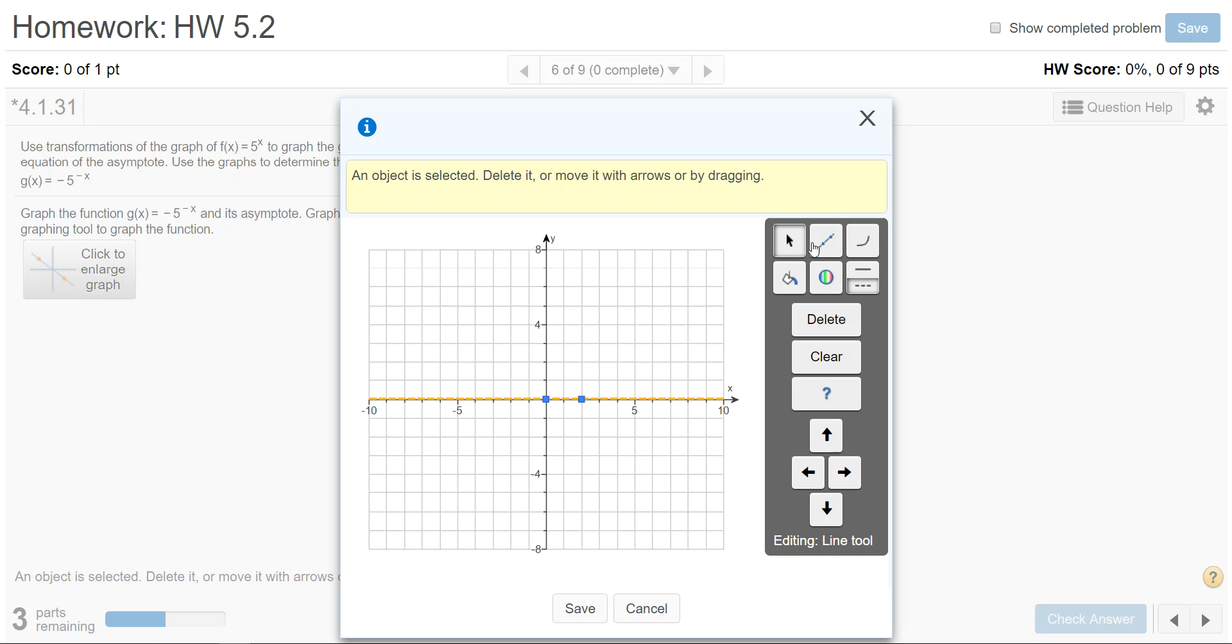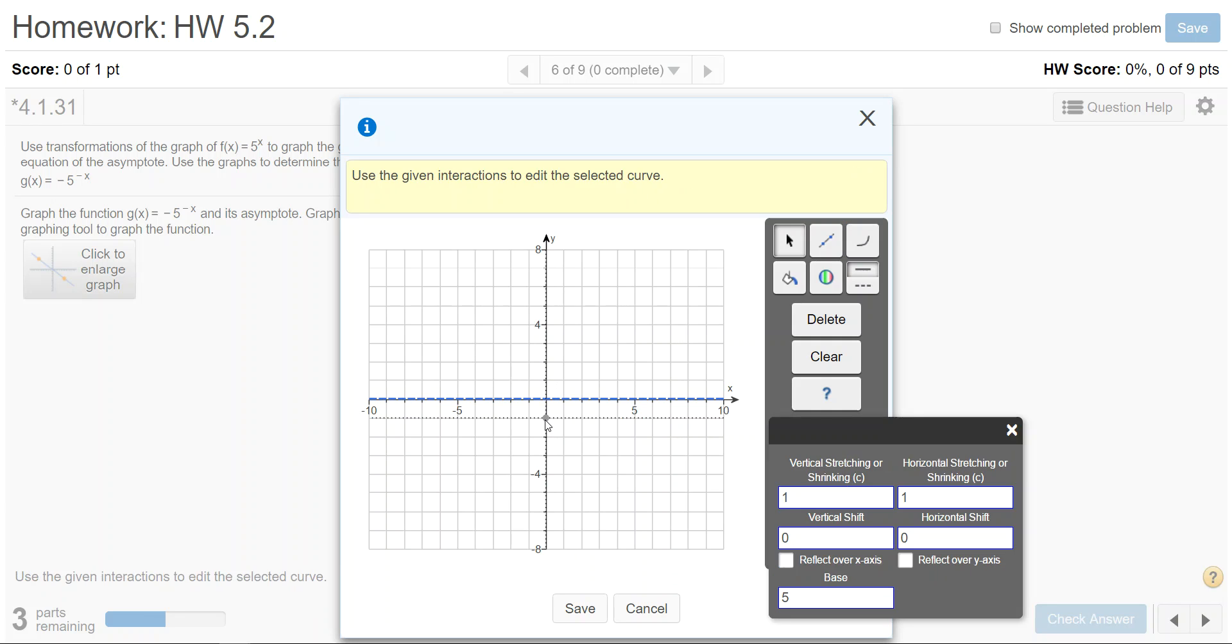Next I want to select the exponential tool and select the solid line and then click to graph this. Anywhere you click it'll default to where it originally is and then you have to put in your movements. The original graph starts with a y-intercept at zero one. I want to do a double reflection. It's not moving up or down at all.